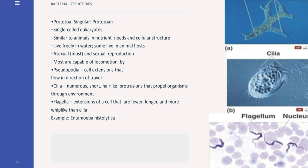And we also have pseudopodia. Pseudopodia are cell extensions that flow in the direction of travel. Cilia are numerous short hair-like protrusions that propel organisms through the environment. And flagella are extensions of a cell that are fewer, longer, and more whip-like than cilia, example of which is the Entamoeba histolytica.